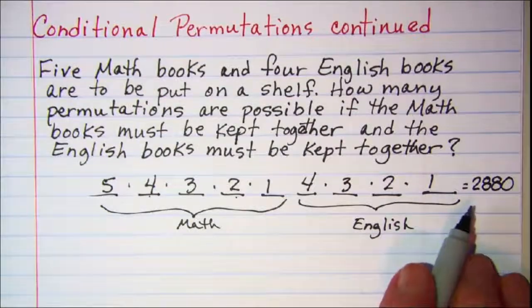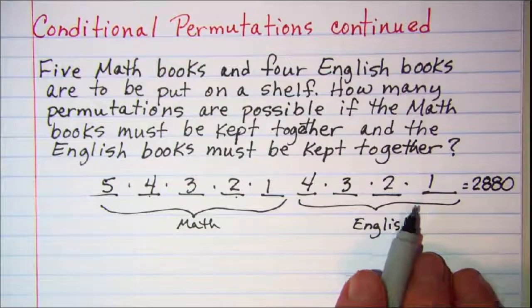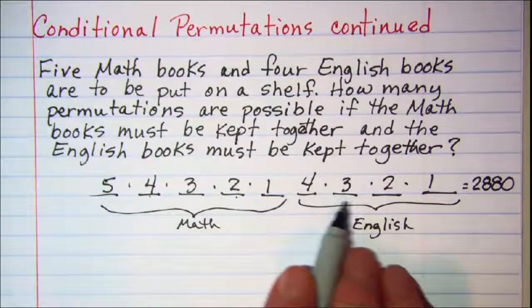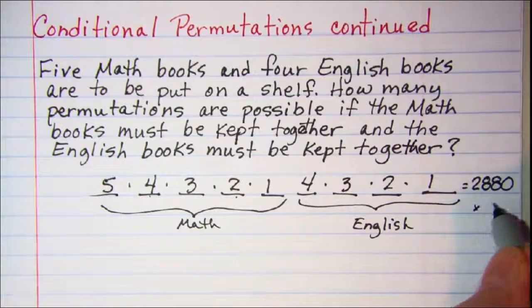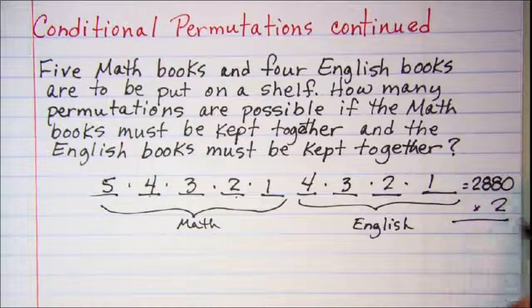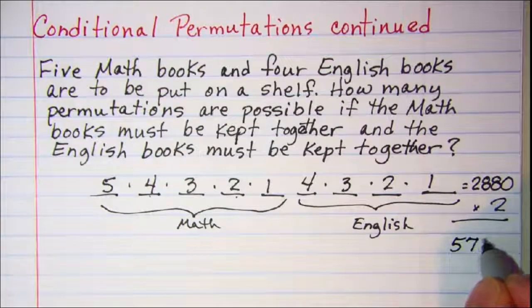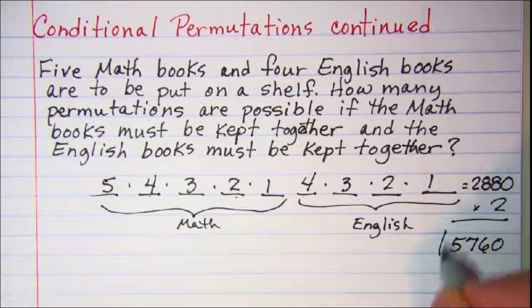Now if we want to account for putting the English books on the left and the math books on the right, all we need to do then is double this number. So I can see then that I have 5,760 permutations.